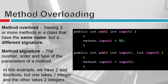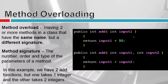Next we'll talk about overloading methods. Method overloading is simply having two or more methods in a class that have the same name but a different method signature. Here you can see two methods both called 'add.' The compiler doesn't complain because of the method signature, which is the number, order, and type of parameters. This function has one parameter — an integer — while this function has two integer parameters. So the computer treats these as two separate functions, even though they have the same name.